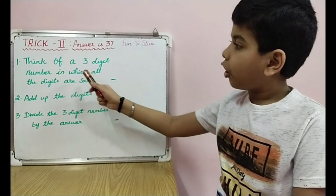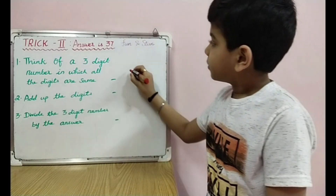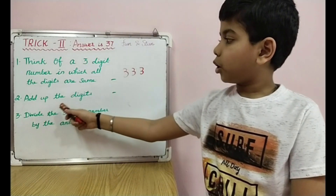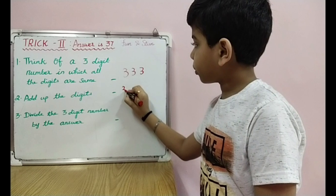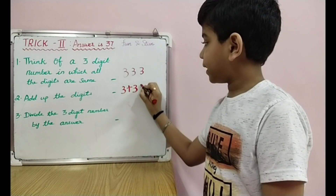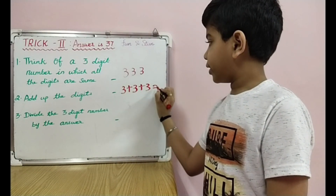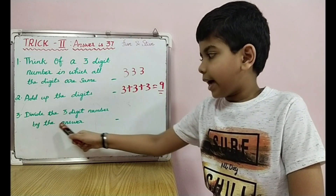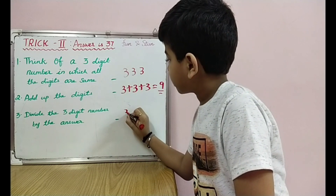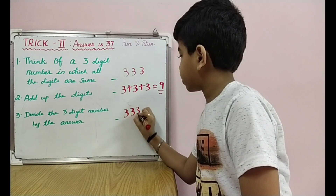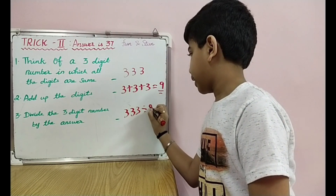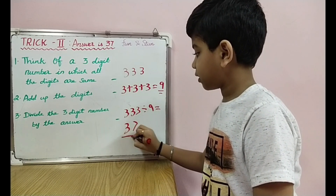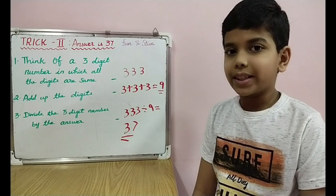Trick 2 — the answer is 37. Think of a three-digit number in which all the digits are the same, for example 333. Add up all the digits: 3 plus 3 plus 3 is equal to 9. Divide the three-digit number by that answer: 333 divided by 9 is equal to 37. You can try this out with different numbers.